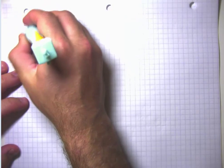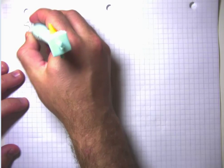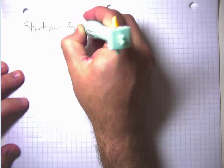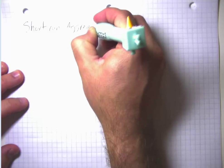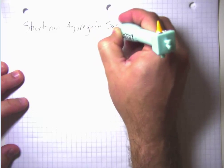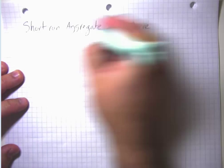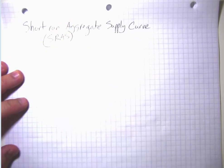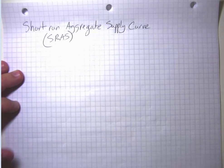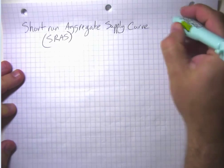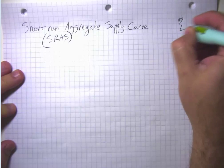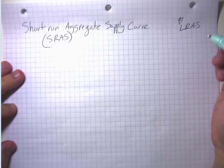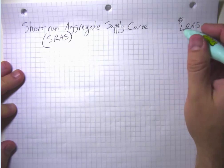Now let me go ahead and talk about the short-run aggregate supply curve. And again, because that's a lot to write, I'm going to abbreviate that SRAS. So we had long-run aggregate supply curve, which was LRAS. Now we have short-run aggregate supply curve, which is SRAS.